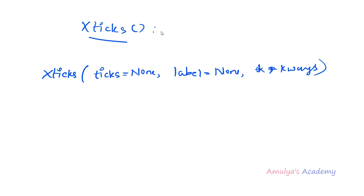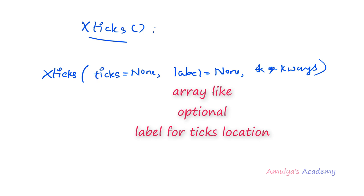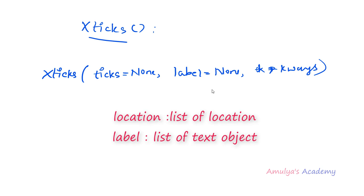If you pass no argument, it will return the current values without modifying them — it returns the current tick location and label. The ticks parameter is array-like and optional; it is the list of x-tick locations, and passing an empty list removes all x-ticks. The labels parameter is also array-like and optional — it places labels at the given tick locations, and can only be passed if ticks is passed as well. The keyword arguments are used to change the text properties of the labels. The function returns the locations (list of x-tick locations) and the labels (list of x-label text objects).